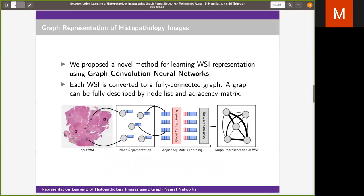We propose a MIL framework for learning WSI representation using graph convolutional neural networks. Our proposed method is two stage. In the first stage, we convert the WSI into a graph representation. In the second stage, we use the graph representation of WSI to get a single feature vector representing the WSI.